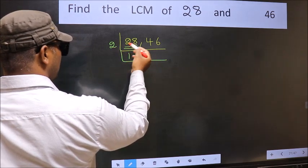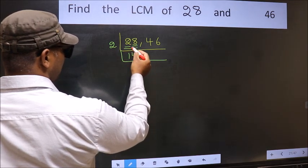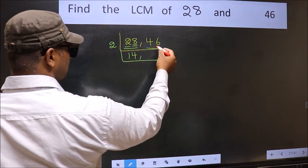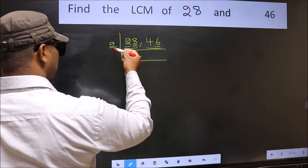The other number 8. When do we get 8 in 2 table? 2, 4's 8. Now the other number 46. Last digit 6, even. So this is divisible by 2.